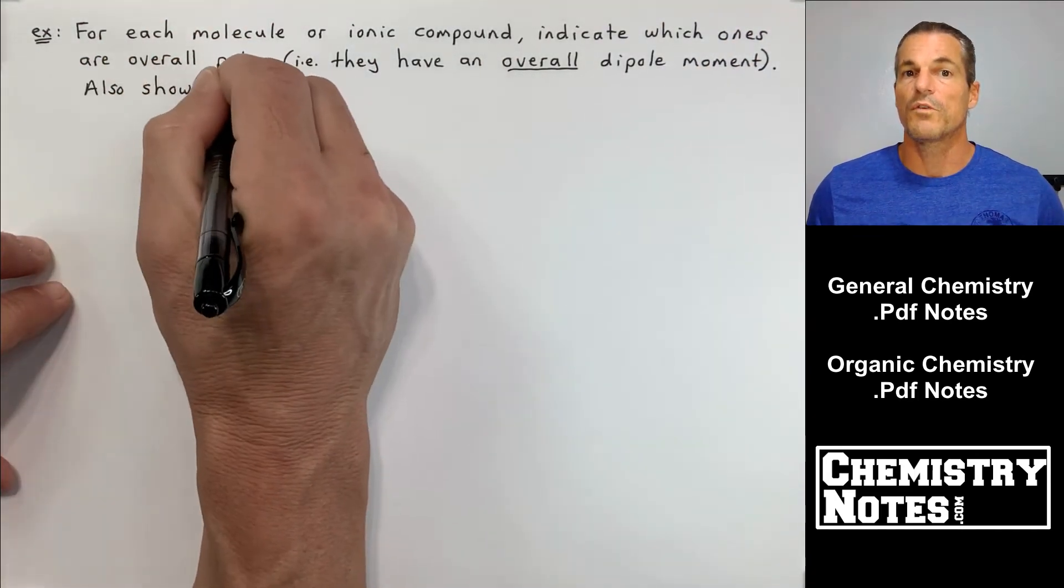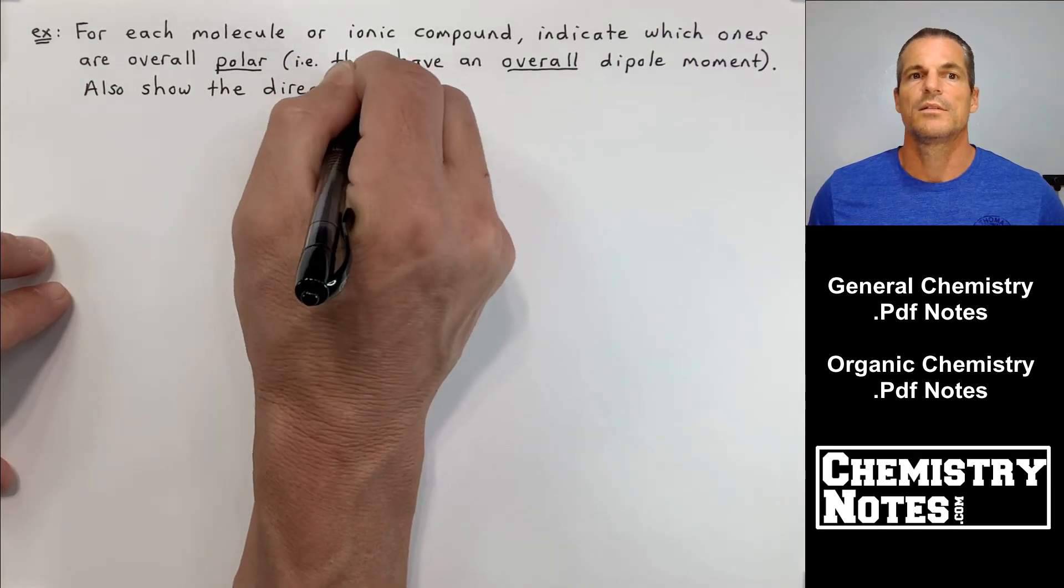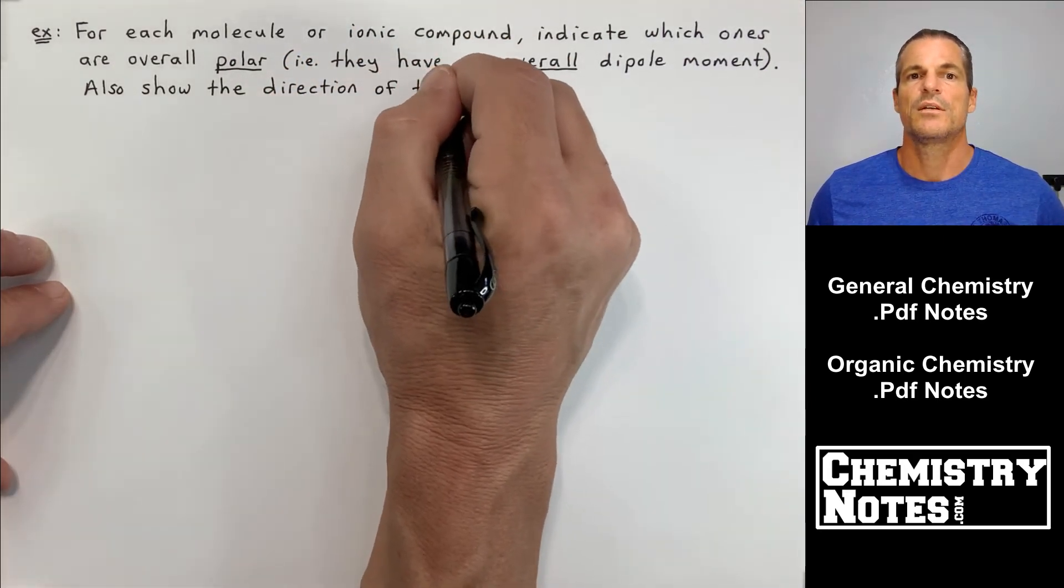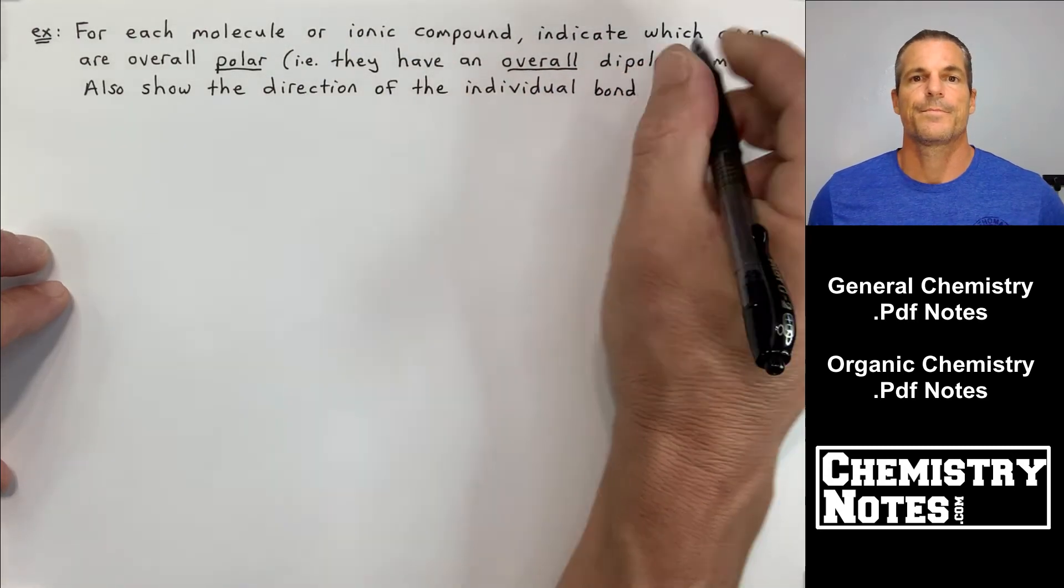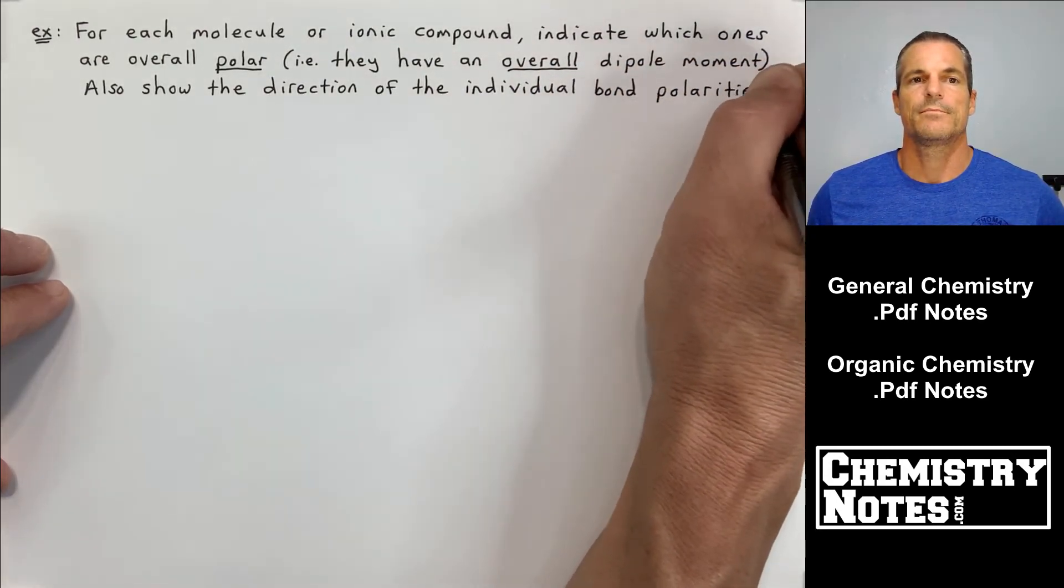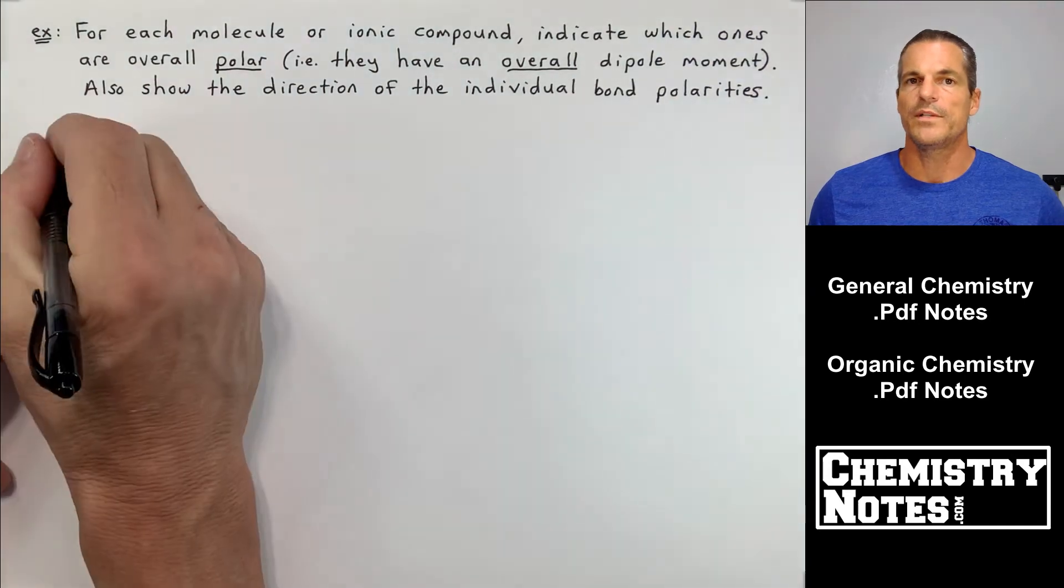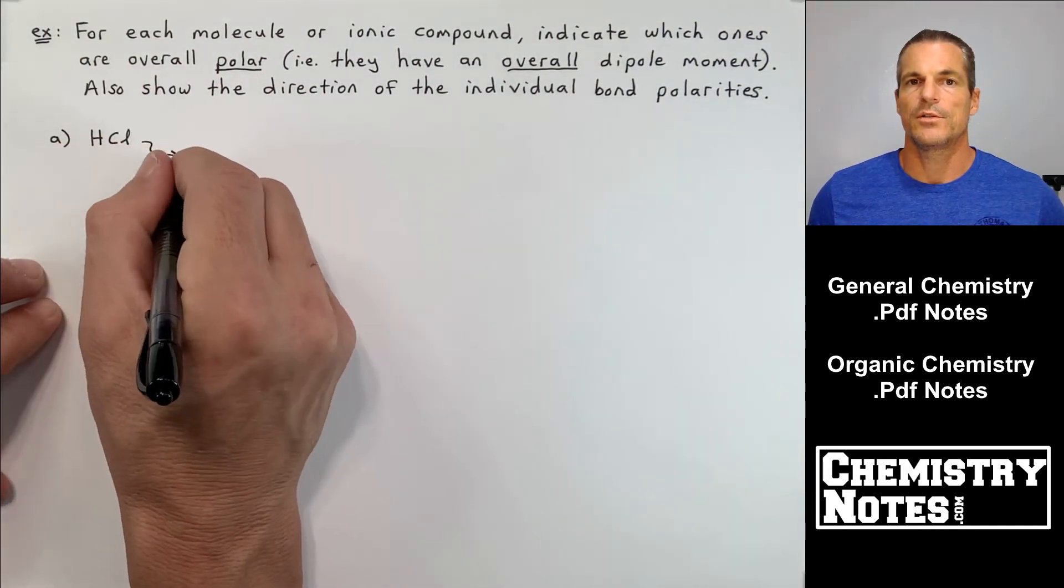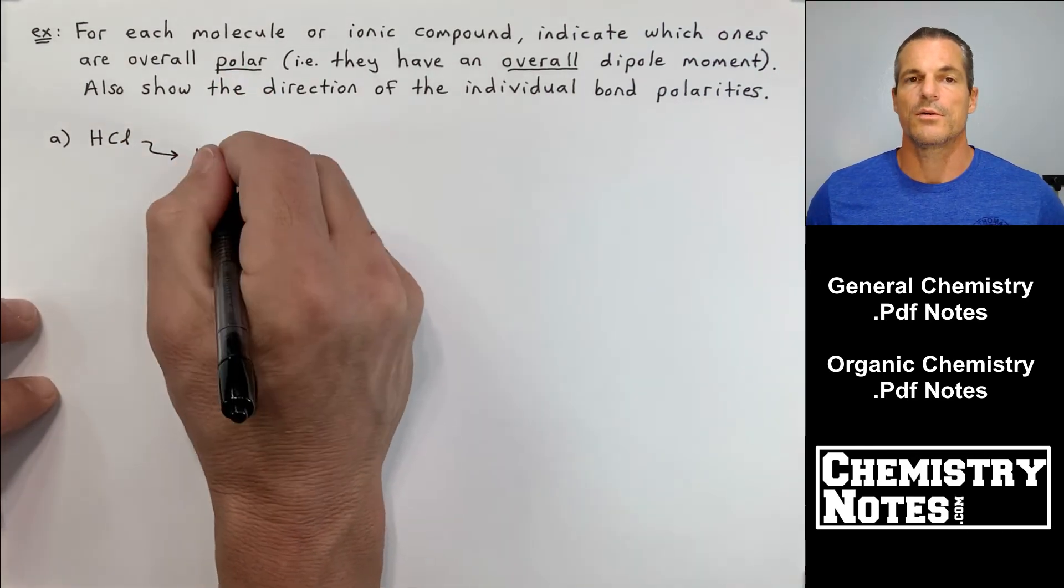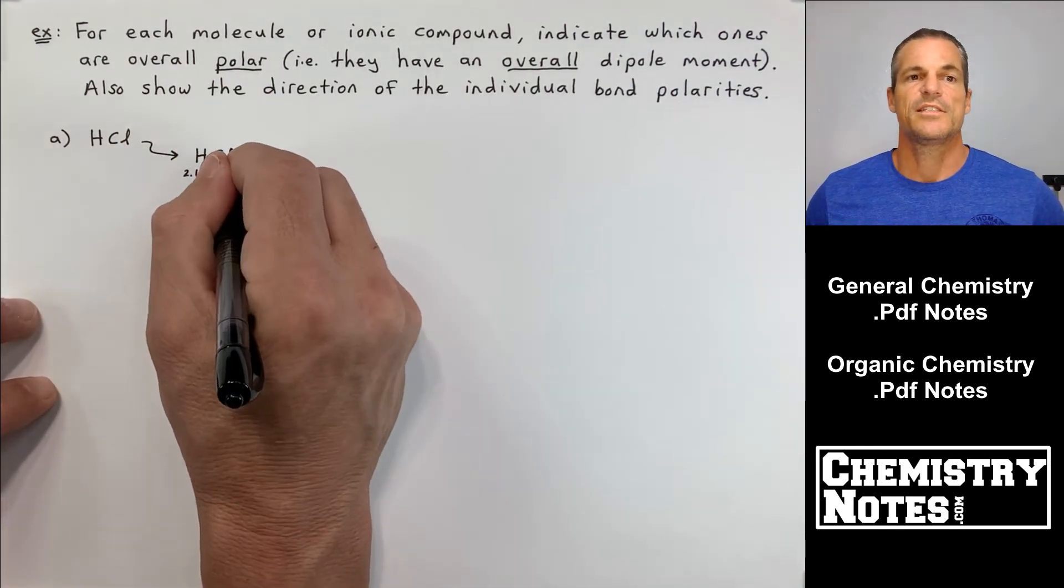So as an example, page four of our notes at the top, it says, example, for each molecule or ionic compound indicate which ones are overall polar. In other words, they have an overall dipole moment. Also show the direction of the individual bond polarities.